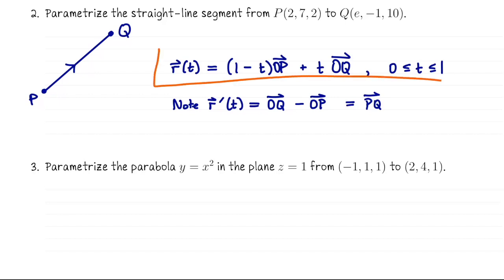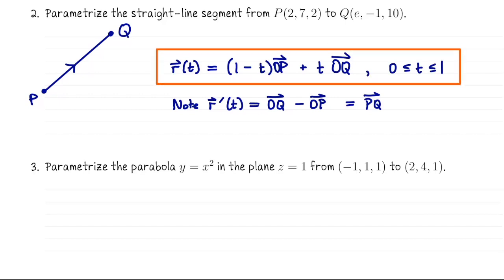So you want to learn this parametrization so that every time you need to parametrize a straight line segment, you can do it right away. Let me just finish this example since we were actually given points p and q. So here's how I would do this. You could leave it like this. This is totally fine.